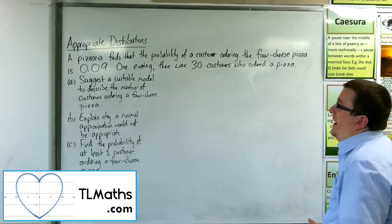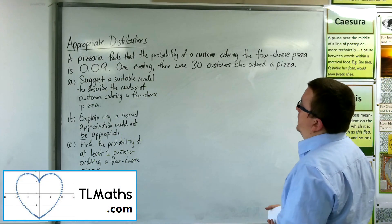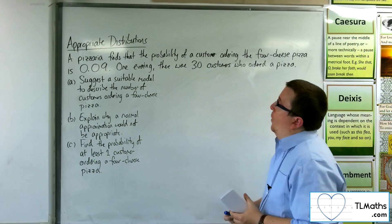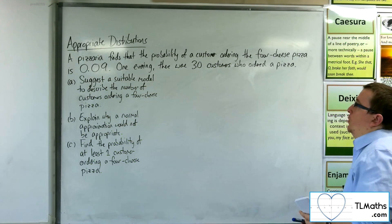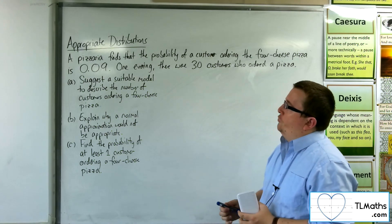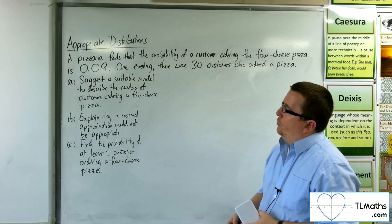In this video, a pizzeria finds that the probability of a customer ordering the four-cheese pizza is 0.09. One evening, there were 30 customers who ordered a pizza. Part A, suggest a suitable model to describe the number of customers ordering a four-cheese pizza.